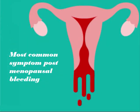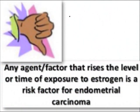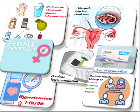The most common symptom is postmenopausal bleeding. Regarding risk factors, any agent or factor that raises the level or duration of exposure to estrogen is a risk factor for endometrial carcinoma. These include female infertility, polycystic ovarian syndrome, use of tamoxifen, diabetes and hypertension, and family history of carcinoma of the breast, ovaries, or colon.